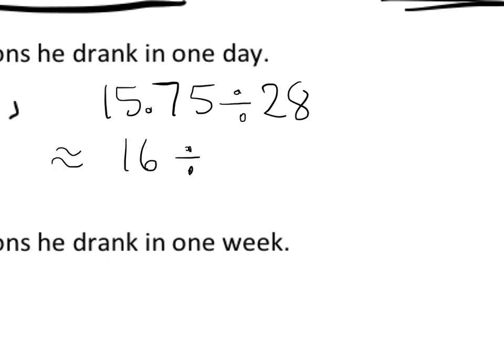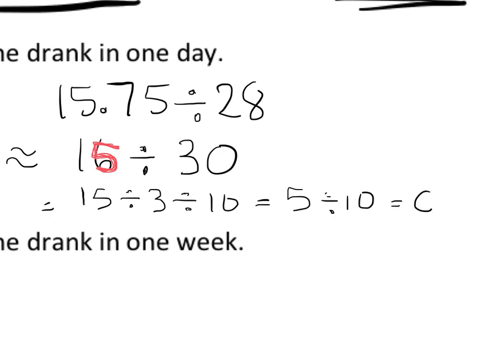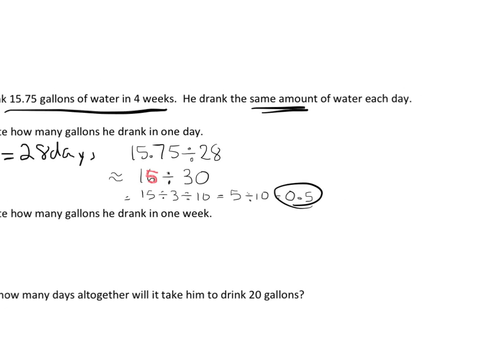That's approximately 16 divided by 30. Since 3 doesn't go into 16 neatly, we can adjust our estimation — change 16 to 15. So 15 divided by 30, which we think of as 15 divided by 3, divided by 10. That's 5 divided by 10, which equals 0.5.